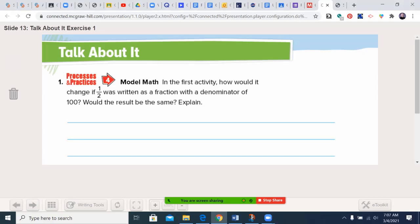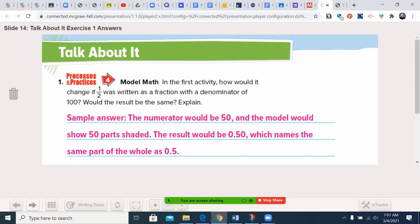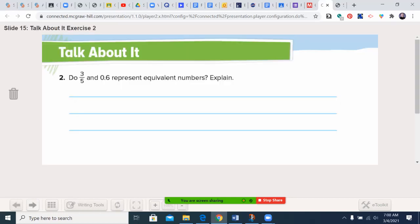Let's talk about it. In the first activity, how would it change if one half was written as a fraction with a denominator of 100? Would the results be the same? Close. It would end up being 50 over 100, which is 0.50. But we know that 0.5 and 0.50 are equivalent. So the result would be roughly the same, but the naming might be slightly different. Do three-fifths and six-tenths represent equivalent numbers? Well, let's figure it out. 0.6 represents six-tenths. Five goes into ten twice, so three times two is six. So six-tenths and 0.6 are equivalent numbers. One is written as a fraction. One is written as a decimal.